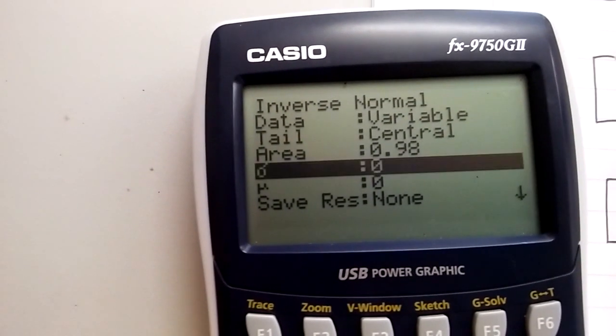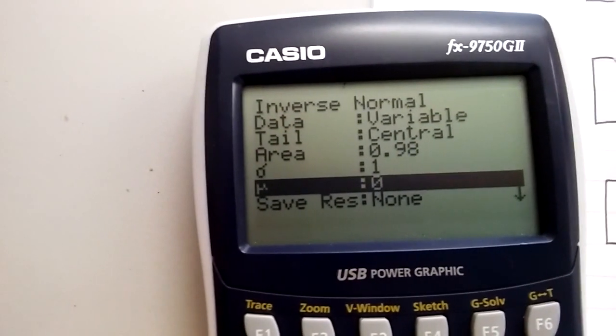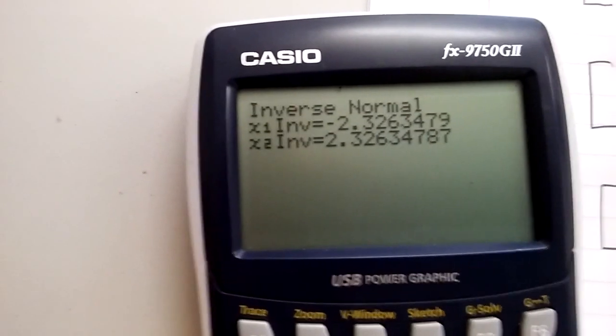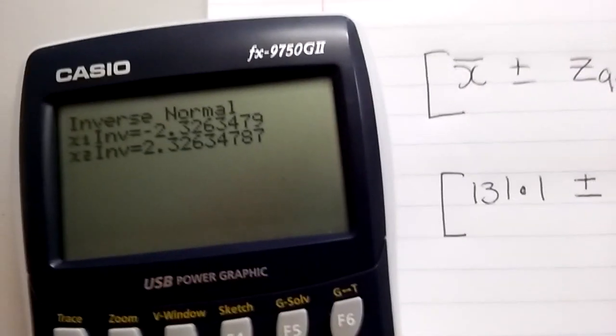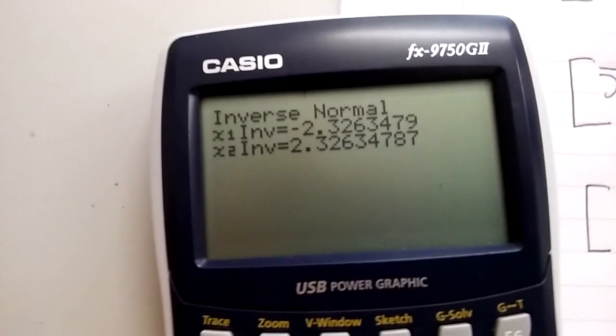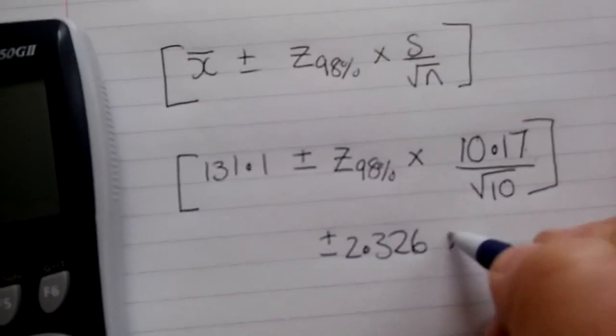The standard deviation for a Z value is always 1, and the mean is always 0. So do that. Press the blue button. And there we get the Z 98% number. So that one is plus and minus 2.326. So we're putting that into there.